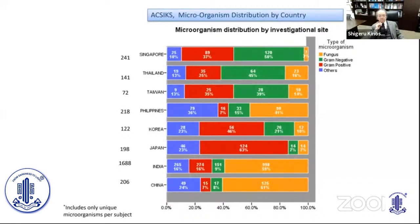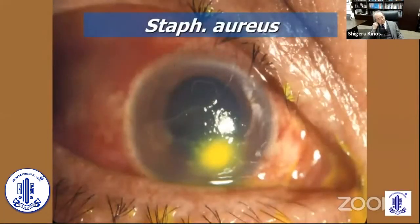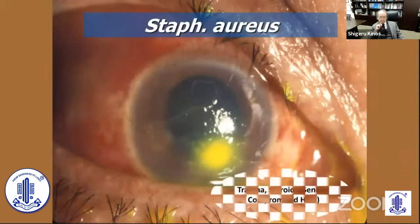Citing data from the AGE6 microorganism distribution by country: in Japan we have more gram-positive bacteria related to corneal infection, while South Asian countries and India have more gram-negative bacteria causing corneal infections. We target Staphylococcus aureus in Japan because of our aging population.